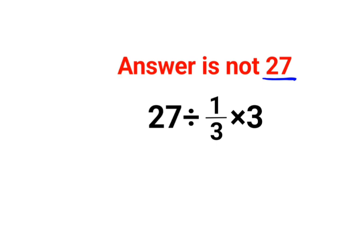See this looks so easy. 1 upon 3 multiplied by 3. This gets cancelled. So answer is 27 divided by 1. Answer comes out to be 27.